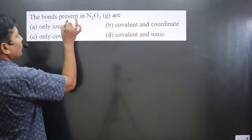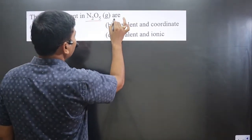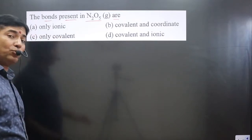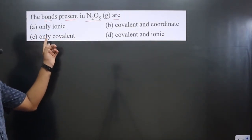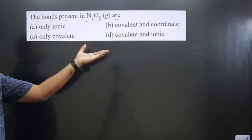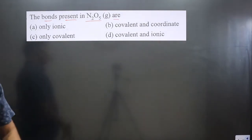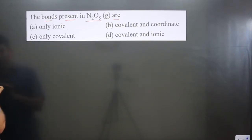The question asks about the bonds present in N2O5 gas. To determine whether it has ionic, covalent, or coordinate bonds, we can draw the structure of this compound and identify the type of bond present.